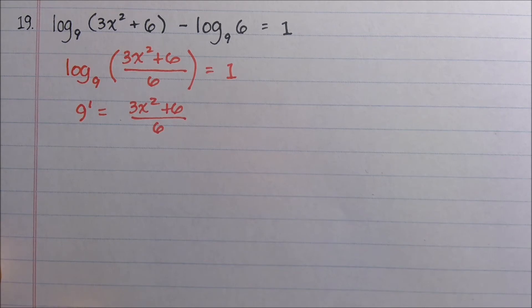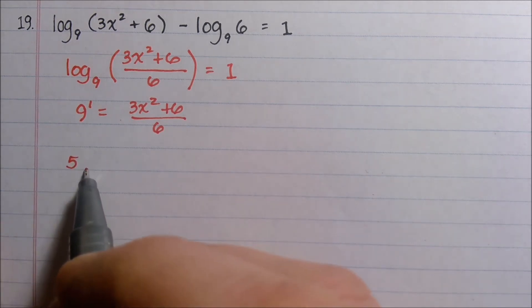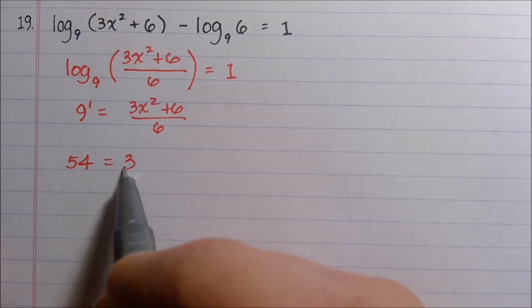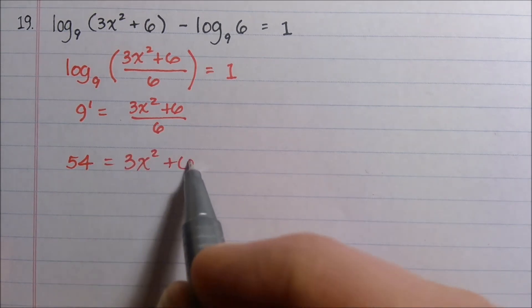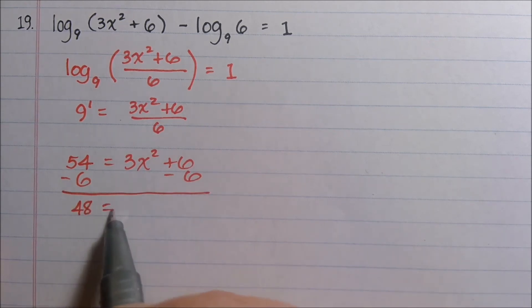Now it's simply a proportion that we can solve using algebraic techniques. 54 equals 3x squared plus 6. We'll subtract 6 from both sides. Get 48 equals 3x squared. Divide by 3 on both sides.